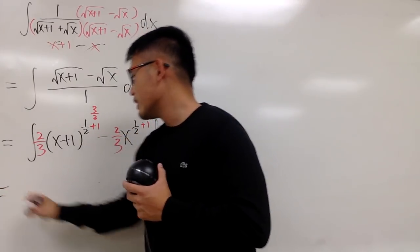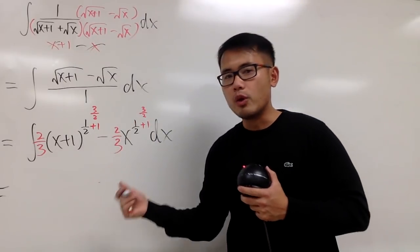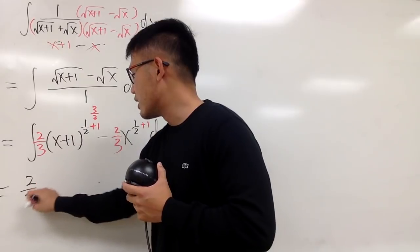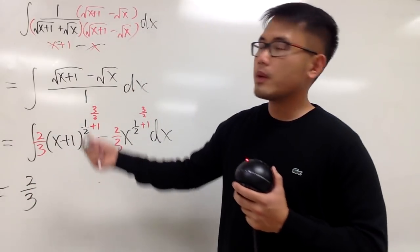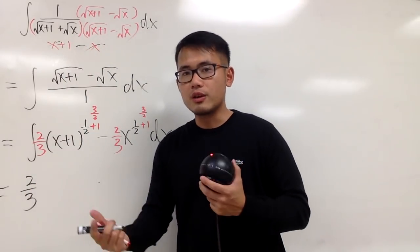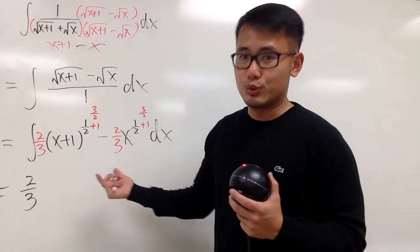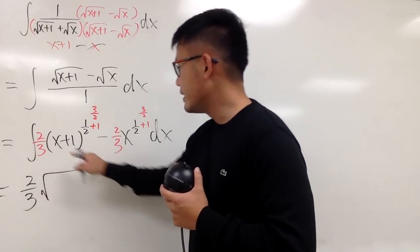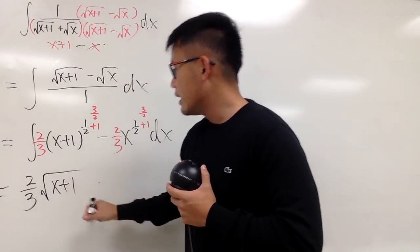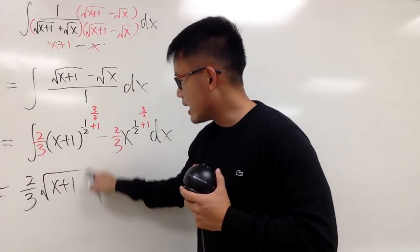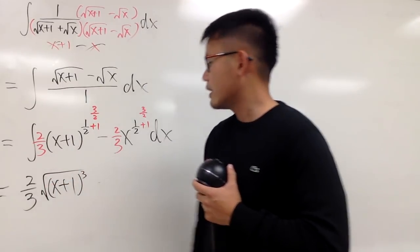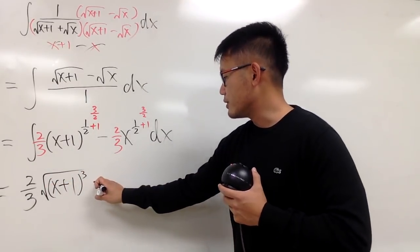So in the end, of course, you can leave the answer in the power form or radical form up to you, but we will have 2 third. And usually, if the question starts off with a radical form, I would like to end up with my answer with radical form as well. So this becomes the square root, and then the x plus 1. And for the third power, you can put this down on the outside, or you can put the third power like this inside, right?